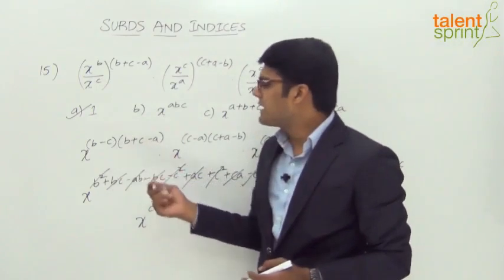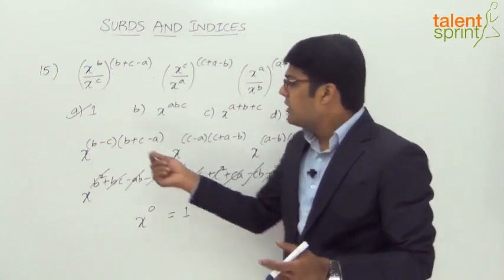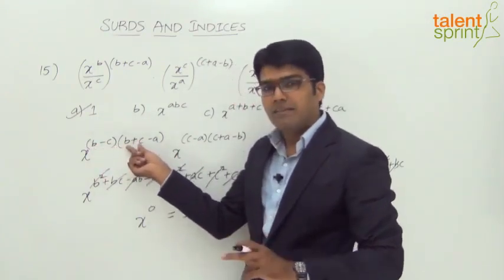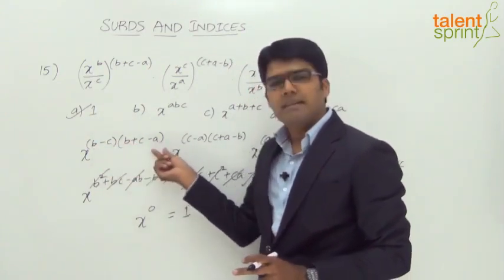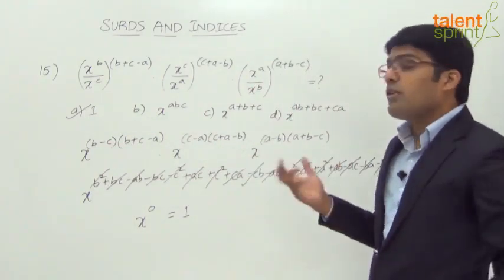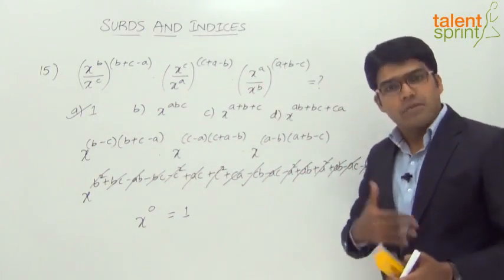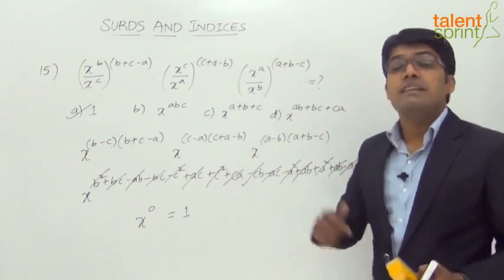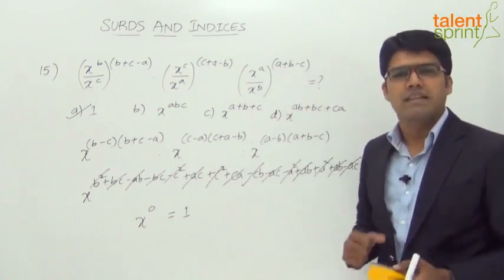There are different ways to multiply these expressions. For example, b−c into b+c gives b²−c², then handle the −a term separately. Now let us look at the substitution method. This method may not apply to every question, but if you substitute values intelligently for a, b, c, and x, you can find the answer in most cases.